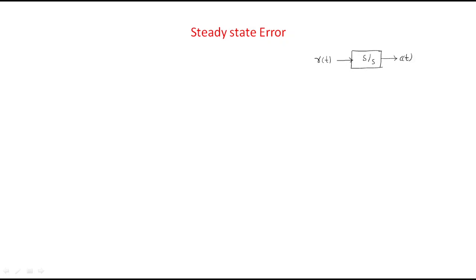In this session we will discuss the topic of steady state error. First, let's discuss what error is generally. In any system, we give an input and we get some output. The error is defined as e(t) = input minus output, that is r(t) minus c(t). The difference between the input and output is known as the error. When t reaches infinite time, this error becomes the steady state error.